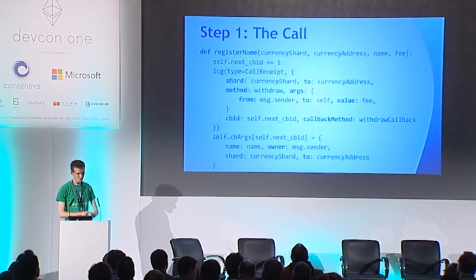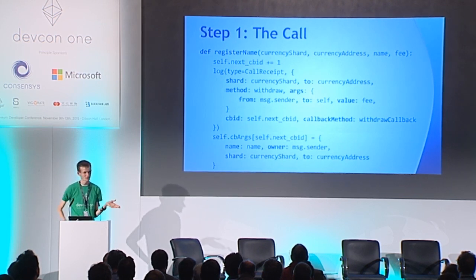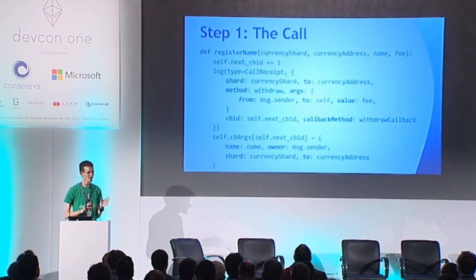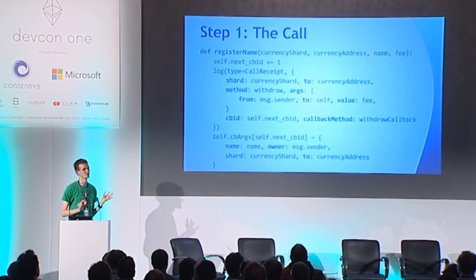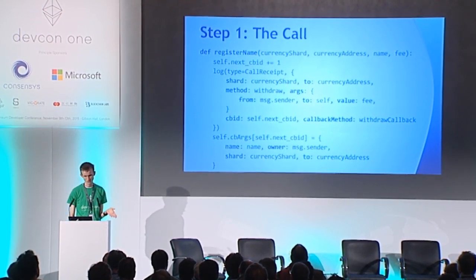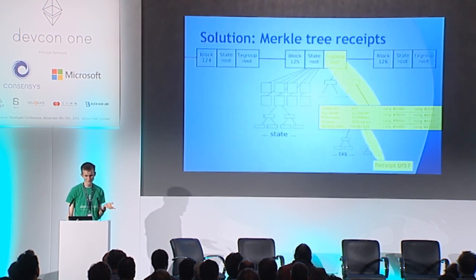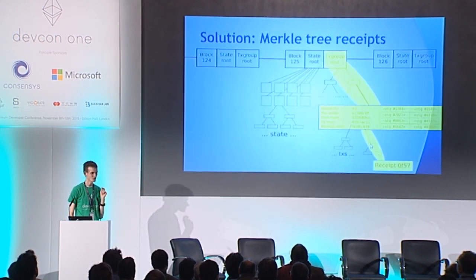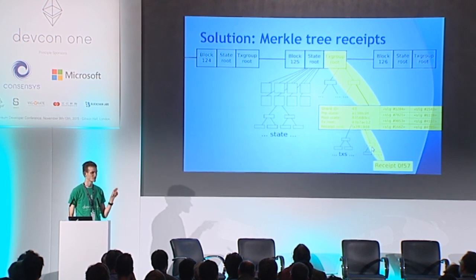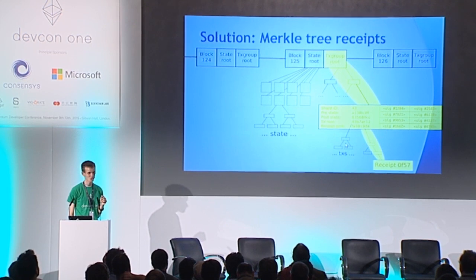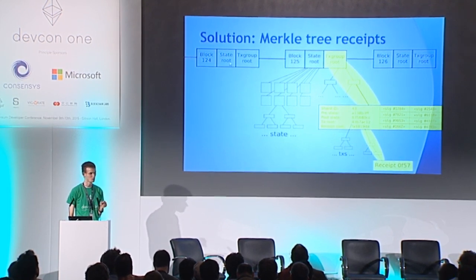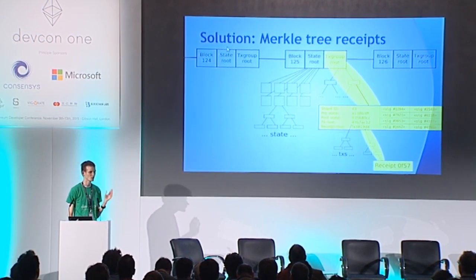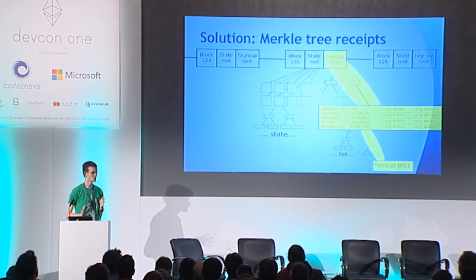What I'm describing here is a fairly standard approach that lets you implement a Node.js-style asynchronous programming model on top of this Ethereum 2.0 infrastructure. The key piece required is that transactions need access to Merkle roots from previous blocks — they should be able to read the global previous state root and global previous transaction group root. They don't need to modify anything globally, just read a historical root, which doesn't prevent parallel computation at all.